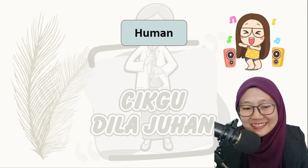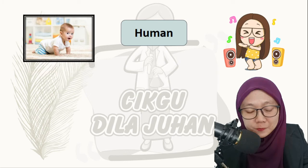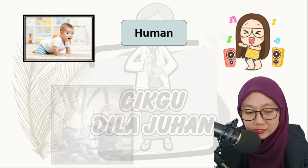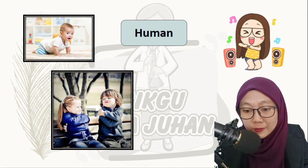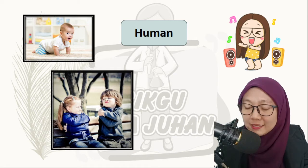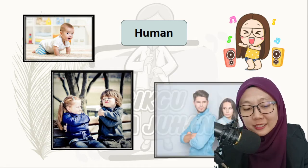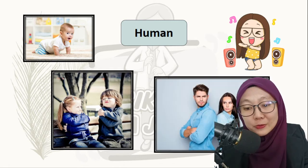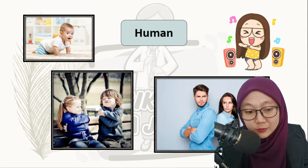You can see that girl dancing. Human is one type of living things. It can be a baby, it can be a child, and it also can be an adult. So that is a human.